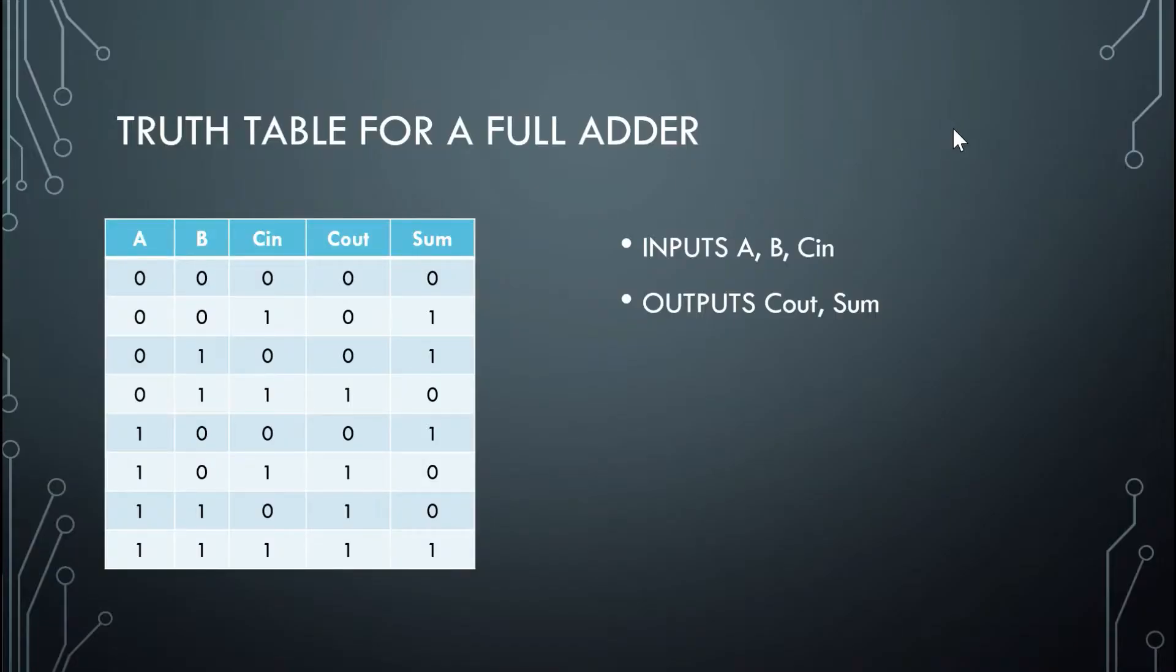Let's move on to the full adder. Here, since we have 3 inputs, we know 2 to the n, which n is equal to 3, we're going to have to count to 8 in this truth table. So this starts from 0, and it goes to 7. And now we're going to use the basic binary addition that we learned earlier to get our Couts and our Sum.